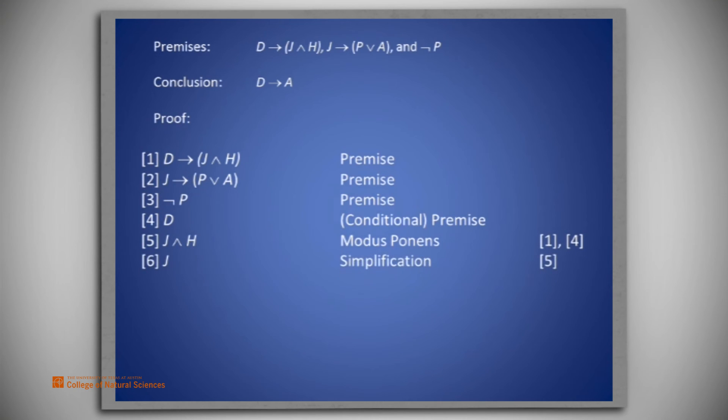Now, simplification of line 5 results in J alone on line 6. Having obtained J, and using line 2, we obtain P or A, using modus ponens.